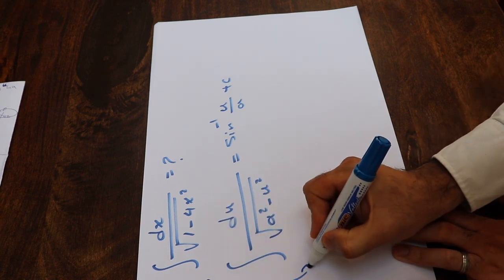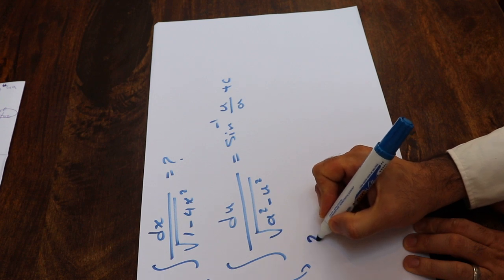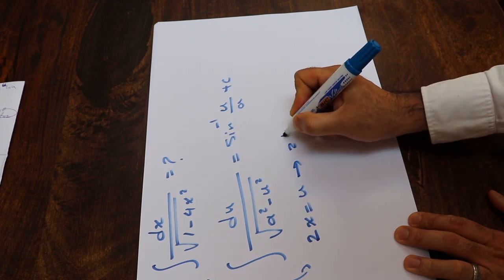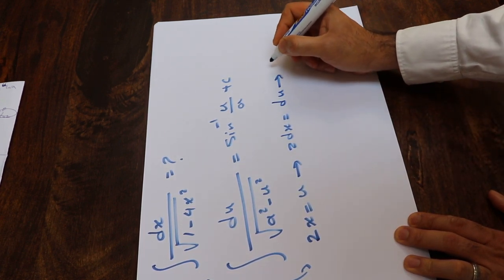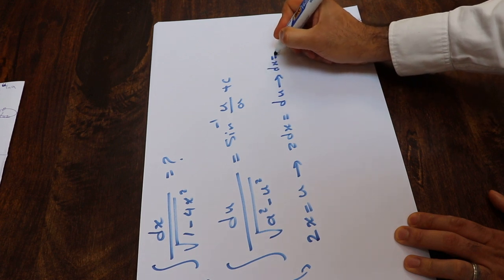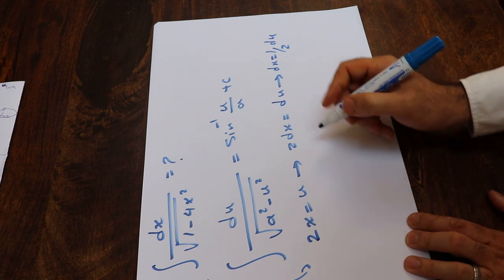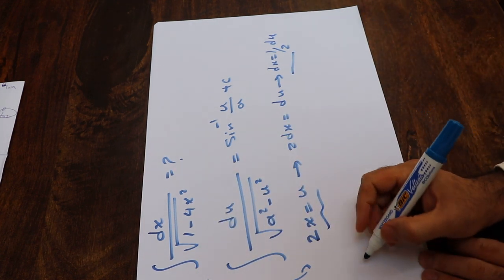So to solve this one, I basically use the substitution rule, that is if I define 2x as u, therefore 2dx will be equal to du. In other words, dx will be equal to 1 divided by 2 times du. So if I now substitute these two expressions into this integral, you will get that...